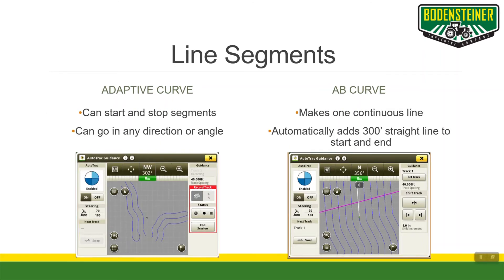When it comes to line segments, adaptive curves can be made in small or big chunks. You can start and stop recording at any time and they can be at any direction or angle. As you can see in the picture, there are multiple segments going at opposite ways across the field. An AB curve is one continuous line — you cannot have multiple segments. When using an AB curve, it automatically adds 300 feet of a straight line at the start and end, which is nice for when turning around and resuming.